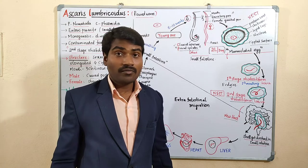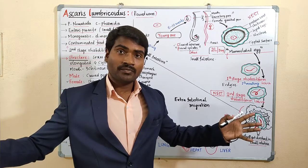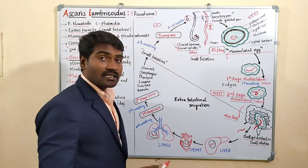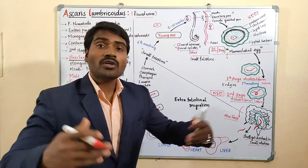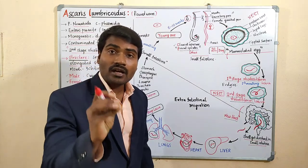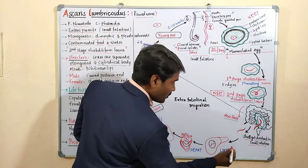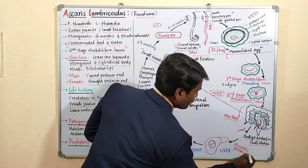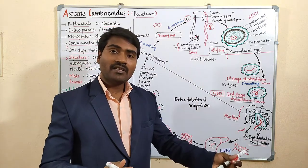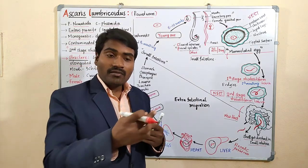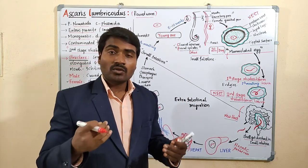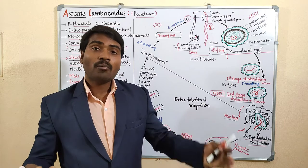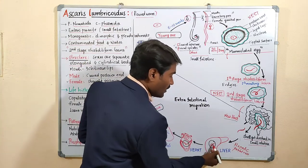Once released, the larvae undergo extra-intestinal migration — they come out from the small intestine and go to different body parts. They first go to the liver through the hepatic portal vein. The hepatic portal vein is a portal system connecting the small intestine and the liver, starting and ending with capillaries. Through this vein, the larva reaches the liver.